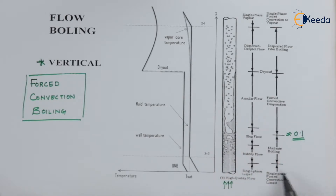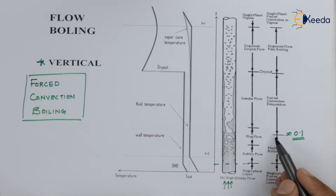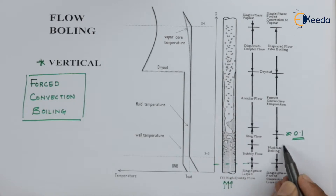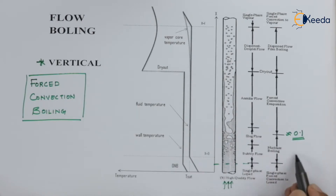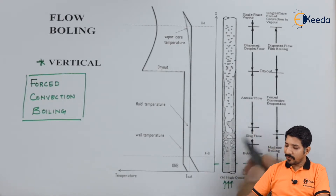The heat transfer is by single phase forced convection in the single phase liquid region. From the bubbly region to part of the slug region, heat transfer is predominantly due to nucleate boiling.